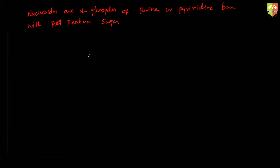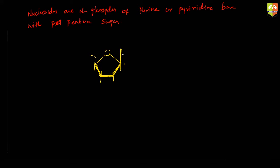Suppose I draw the structure of sugar here. This is a structure of sugar — I won't draw the entire thing. We have all these bonds: OH, H, and CH2OH. This C1 carbon is attached with the base like this — nitrogen and then the ring. Write down here: base, N-base. So this link is the N-glycosidic bond.